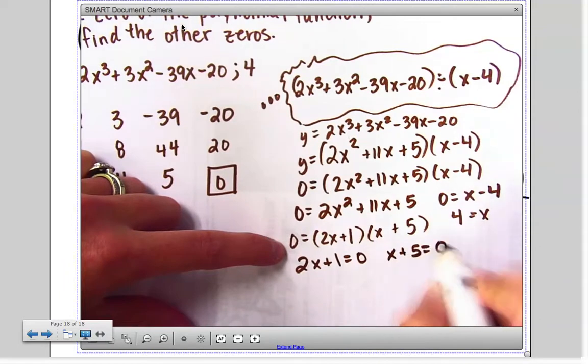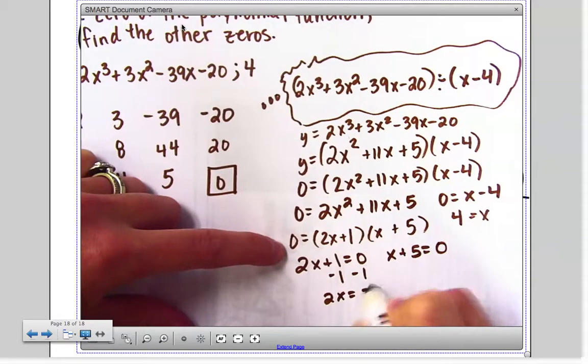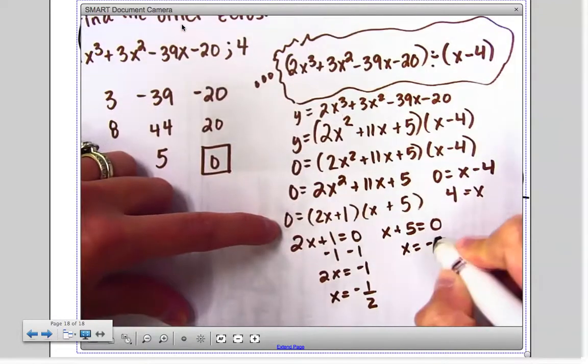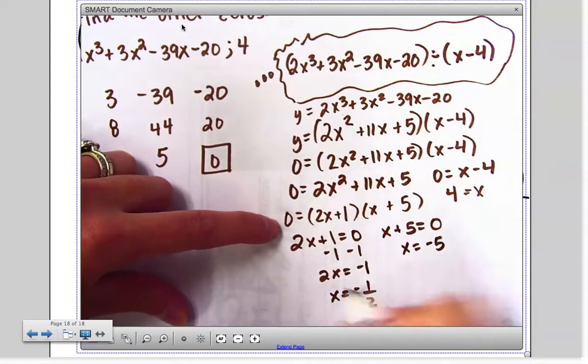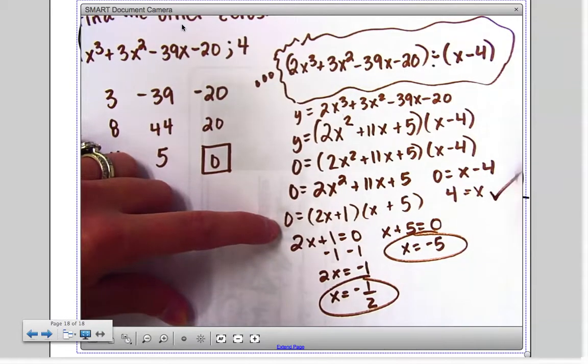And now I can solve this one. I'm going to subtract one and then divide by two. And here I'm going to just subtract five. So the two x-intercepts that I'm missing are these two. Remember they gave me that third one.